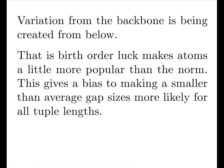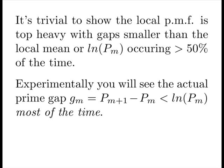Variation from the backbone is being created from below. That is, the birth order luck makes atoms a little more popular than the norm. This gives a bias to making a smaller than average gap sizes more likely for all tuple lengths. It's trivial to show that the local PMF is top-heavy with gaps smaller than the local mean occurring greater than 50% of the time. Experimentally, you will see the actual gap is less than the log most of the time.